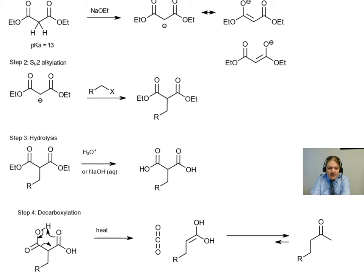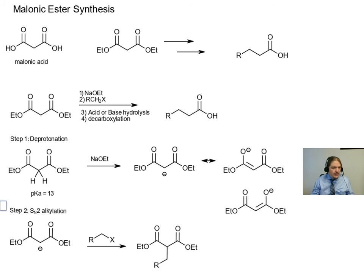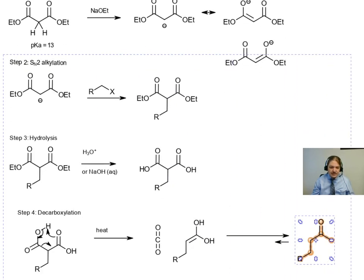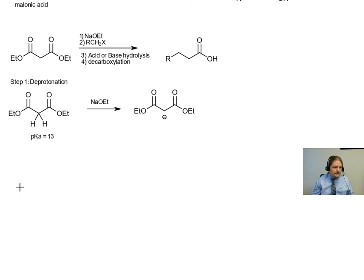Before we end this video, I want to go back up here to our deprotonation step and let's talk about an issue that we talk about a lot in organic chemistry. And that's the issue of base choice. And clearly I have chosen sodium ethoxide. Sodium ethoxide is the conjugate base of ethanol. And ethanol has a pKa around 16. So sodium ethoxide should be a strong enough base to deprotonate diethylmalonate. The real question is, why didn't I use some other base like sodium hydroxide?